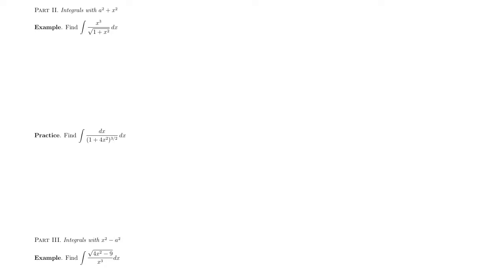In the example here, we see a 1 plus x squared in the denominator under the square root sign. And so we know that the identity 1 plus tangent squared t equals secant squared of t may be helpful in this situation. So we make the substitution. Let's change x to be tangent of t.